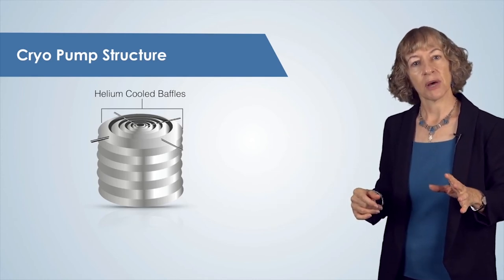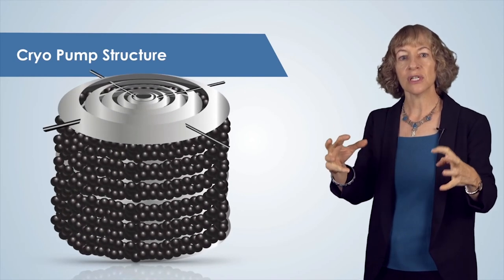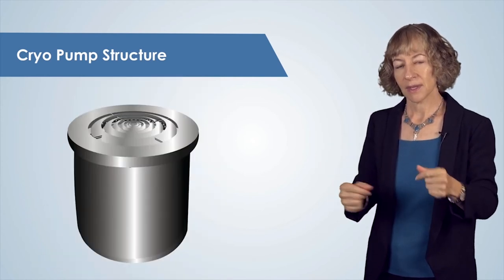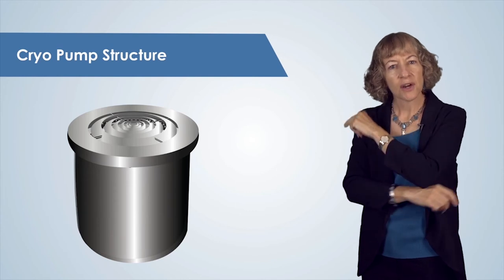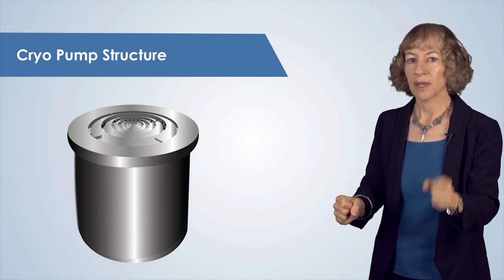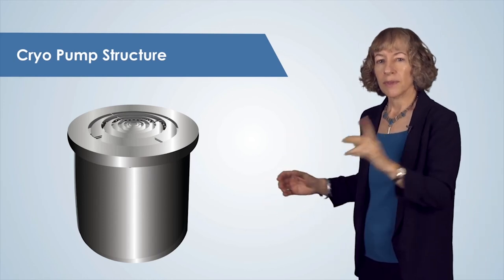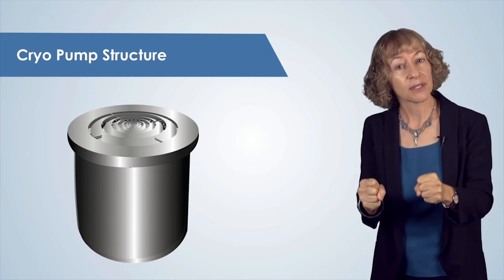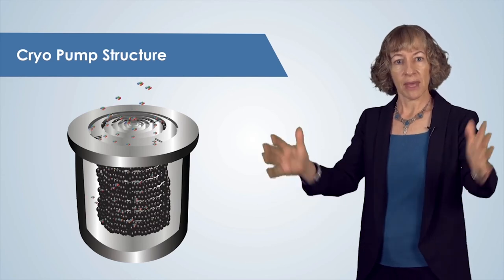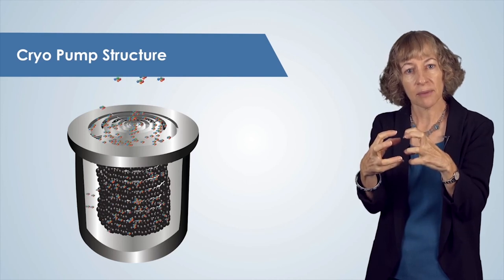Some areas in the pump are even covered with activated carbon, which is porous and has extremely large surface area to trap even more air molecules. Here's a good question: where do the air molecules go that are frozen on the cryo pump? A very good question, because the cryo pump has no outlet. The air molecules stay frozen and trapped in that pump until, at some point, all of the surface area on the metal fins and all of the pores in the carbon become filled with trapped air molecules.